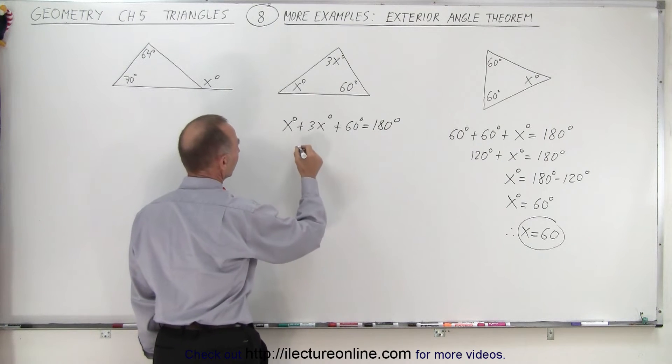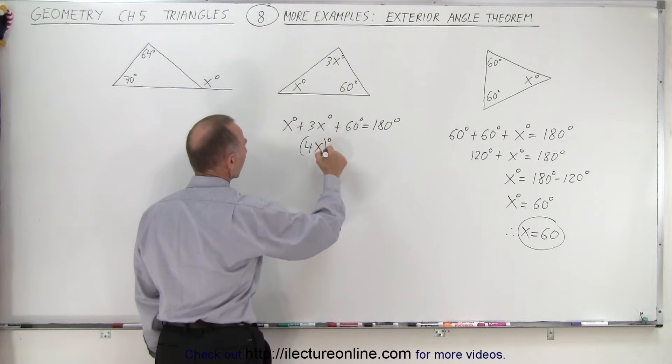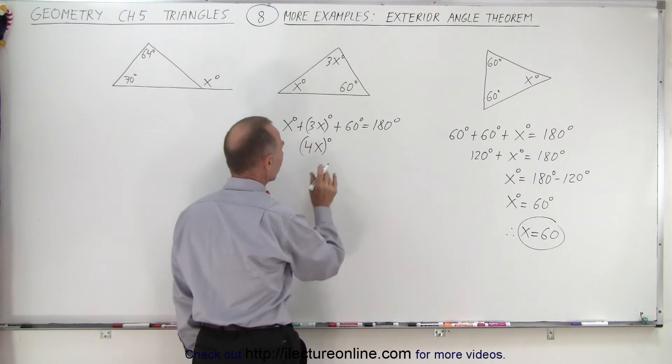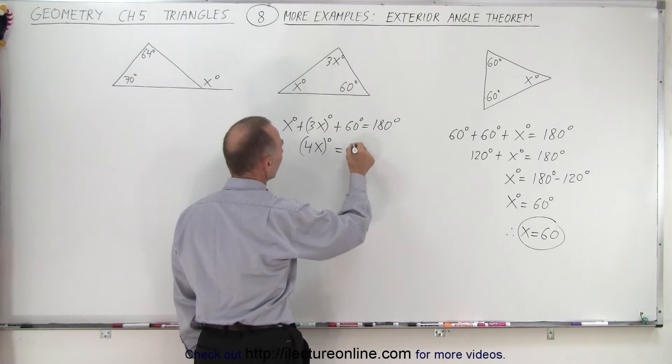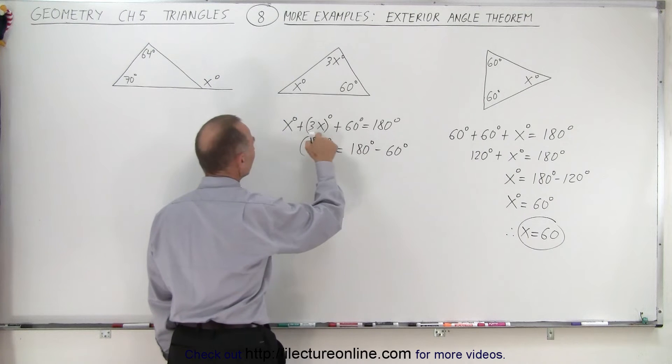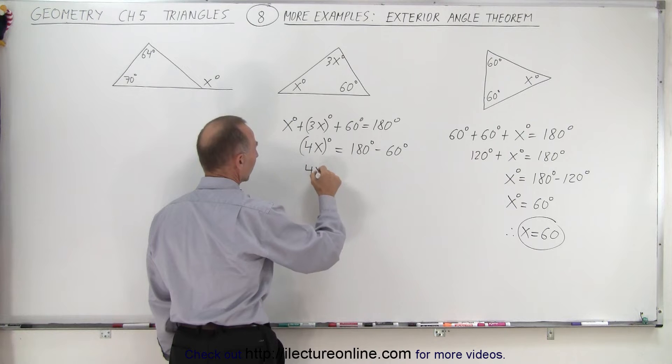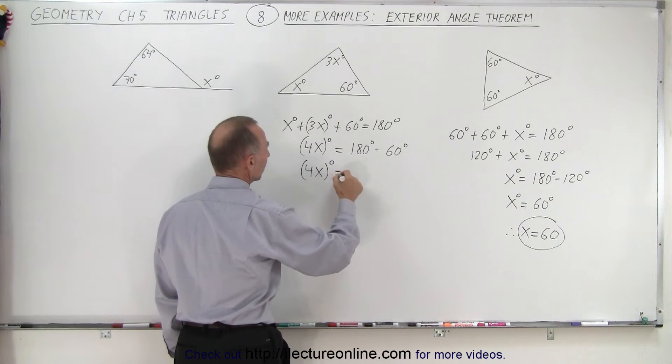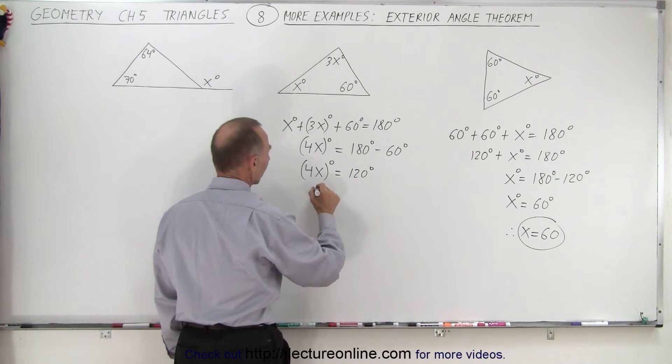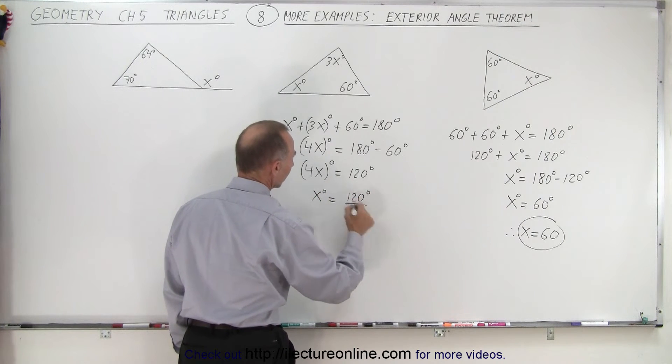So here we can see that 4x degrees—and if you want to put parentheses around it like that, realize that it's the whole thing—plus 60 degrees equals 180 degrees. So I added these two terms together and I subtract the 60 degrees from both sides. So 4x degrees equals 120 degrees.